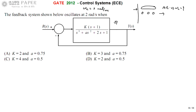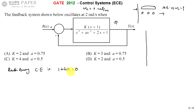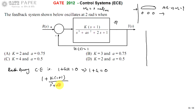So first we construct the Routh array, get the all-zeros row, and then calculate the required omega_n. The Routh-Hurwitz criteria always uses the characteristic equation. The characteristic equation is 1 + GH = 0. Since this is a unity feedback system, H(s) = 1, so the characteristic equation simplifies to 1 + G = 0.